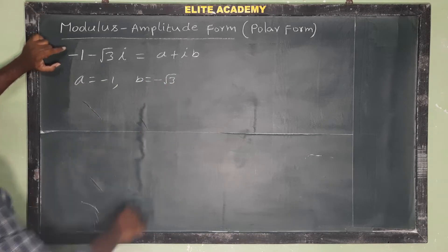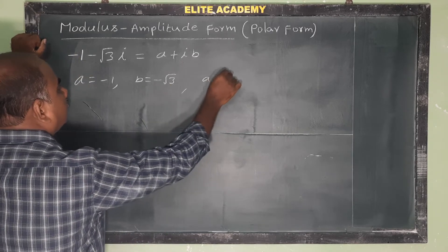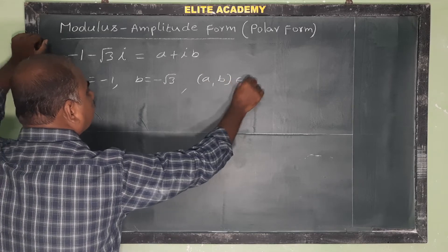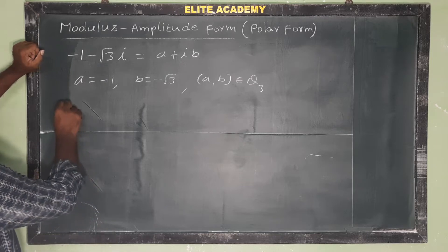Both are negative, so (a, b) belongs to Q3, the third quadrant. Next, we calculate r.